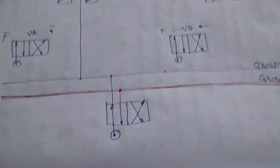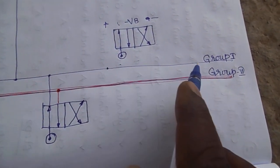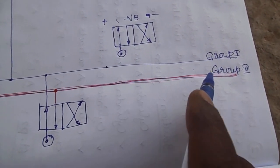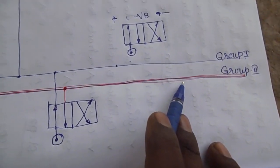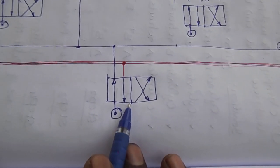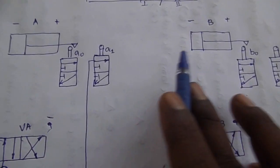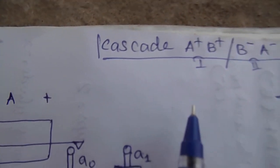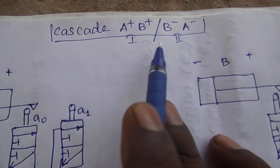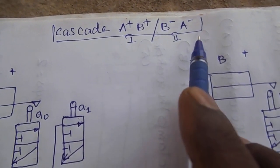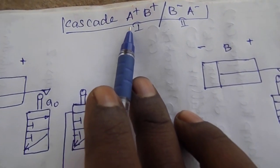We have two groups. This is a blue color group and a red color group. This is a cascade wall, i.e., a group-changing wall. The heading is cascade: A plus, B plus slash B minus, A minus. That is a group of two. The first group, group one, is A plus.